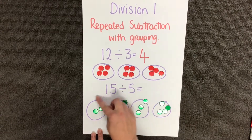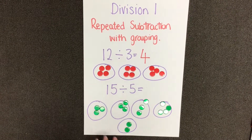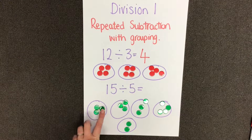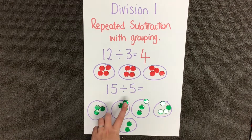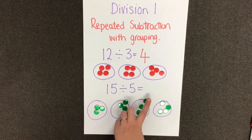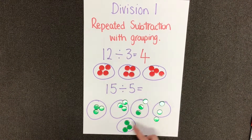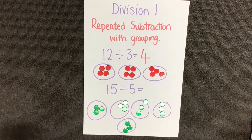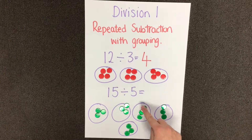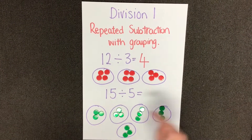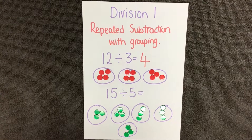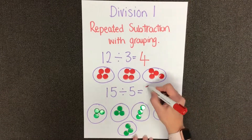Finally we can count up how many counters we have in each group. 1, 2, 3. 1, 2, 3. 1, 2, 3. 1, 2, 3. 1, 2, 3. Therefore the answer to 15 divided by 5 equals 3.